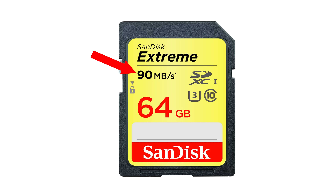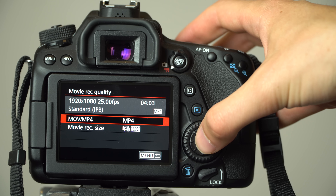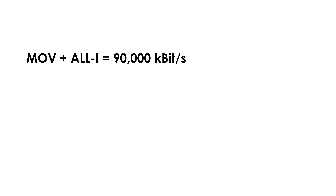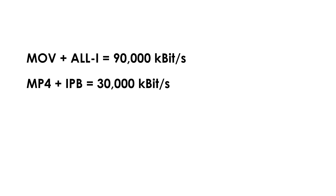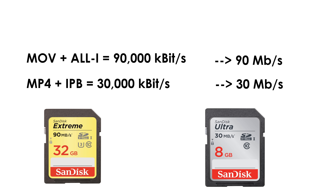Depending on the resolution and format you use, the video will have a different bitrate. My Canon 80D, for example, can record in MOV or MP4 and in ALLi or IPB. MOV and ALLi has a bitrate of 90,000 kilobit per second; MP4 and IPB only 30,000 kilobit per second — equal to 90 megabit per second and 30 megabit per second. Does that mean that for MOV and ALLi I need a card with 90 megabit per second, and for MP4 and IPB 30 megabit per second?